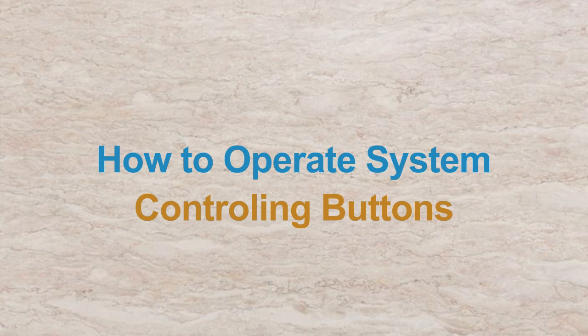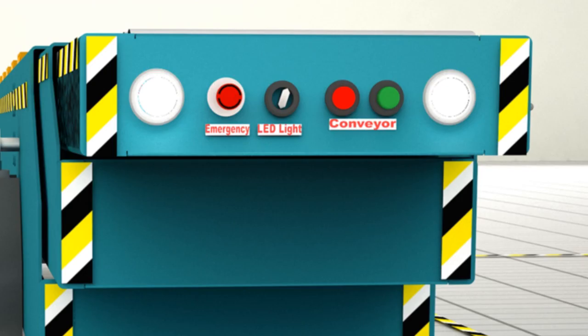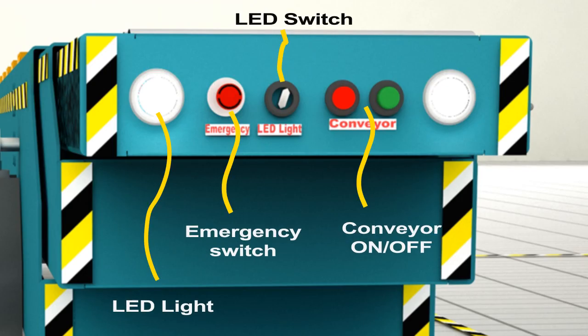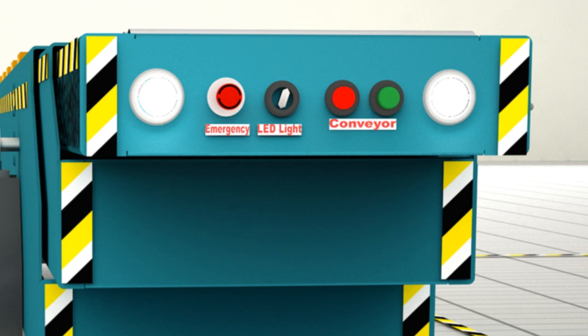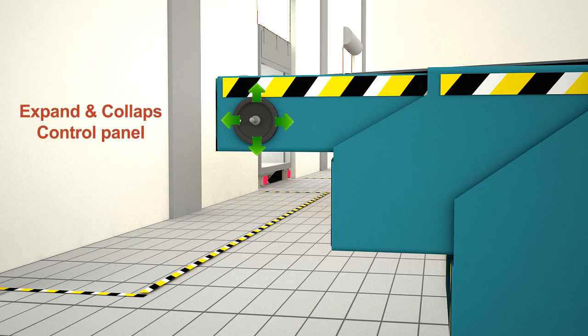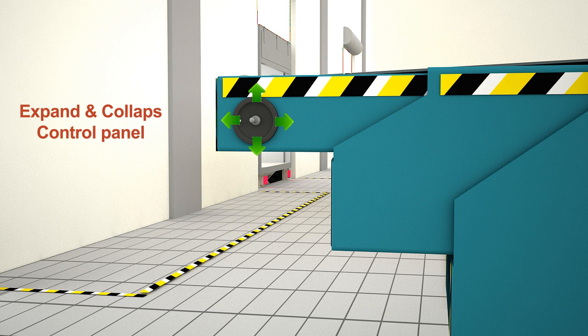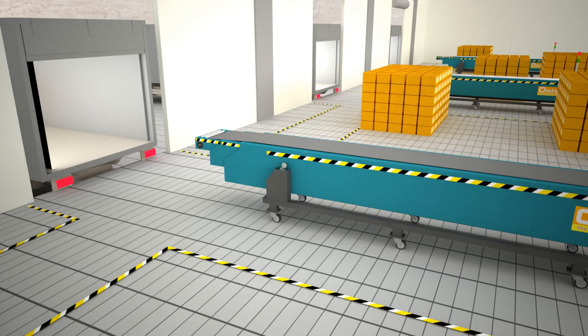At the front of the system: LED lights, emergency switch, and conveyor start-stop buttons. You can easily start and stop the system. LED lights are provided for clear vision during loading and unloading. Let's understand how to expand and collect the system.